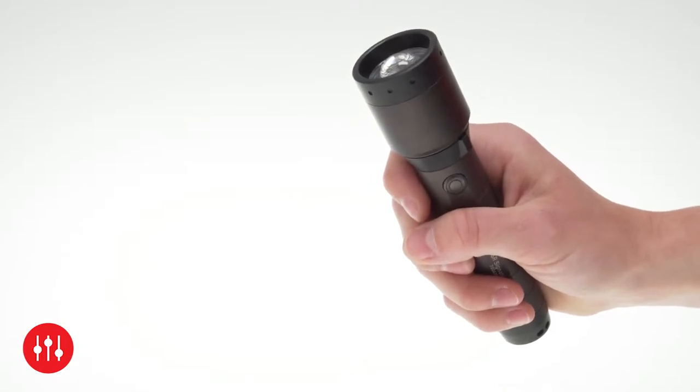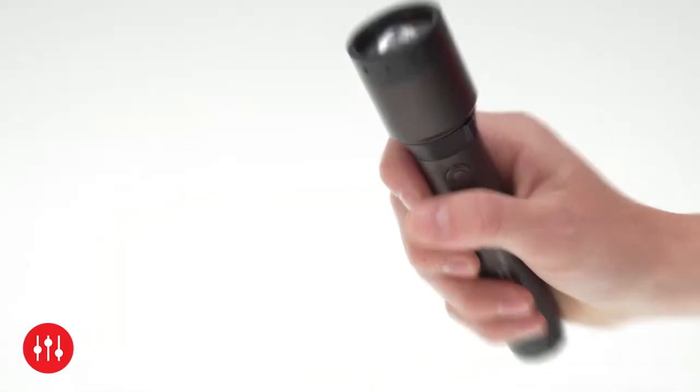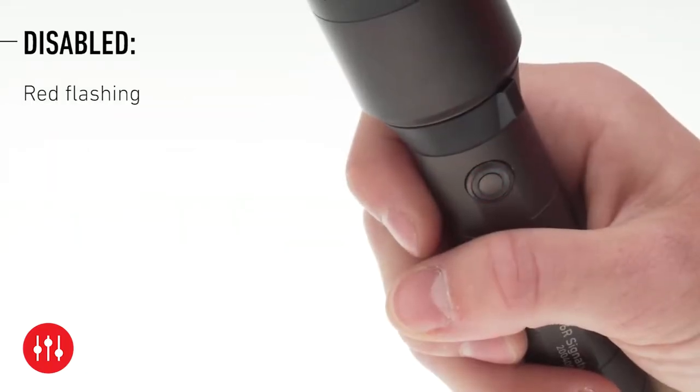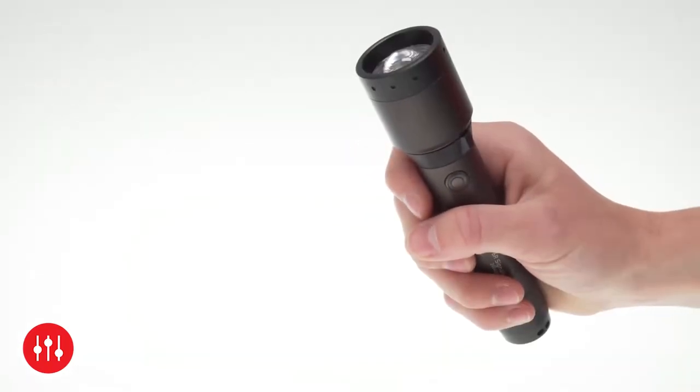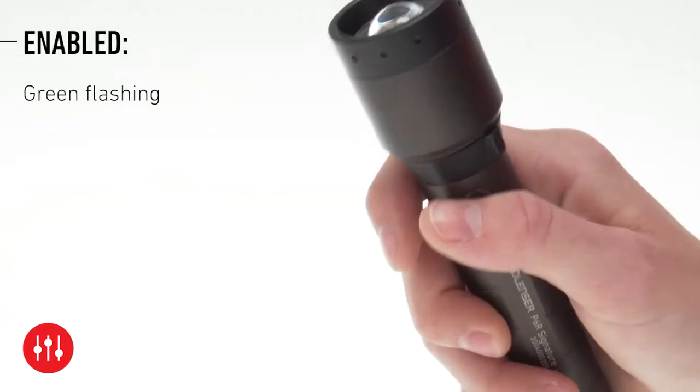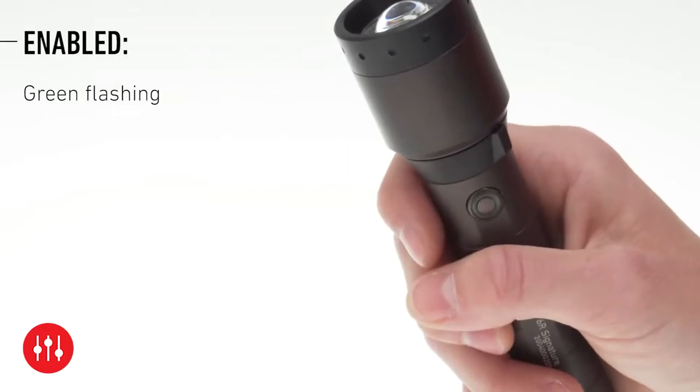Now press once to deactivate the memory mode. As confirmation, the front switch will flash red twice. You can reactivate the memory mode in the same way. Then the front switch would instead flash green twice as confirmation.